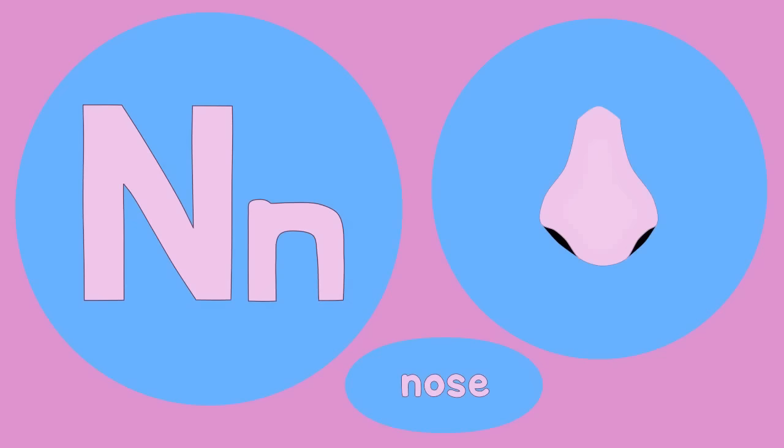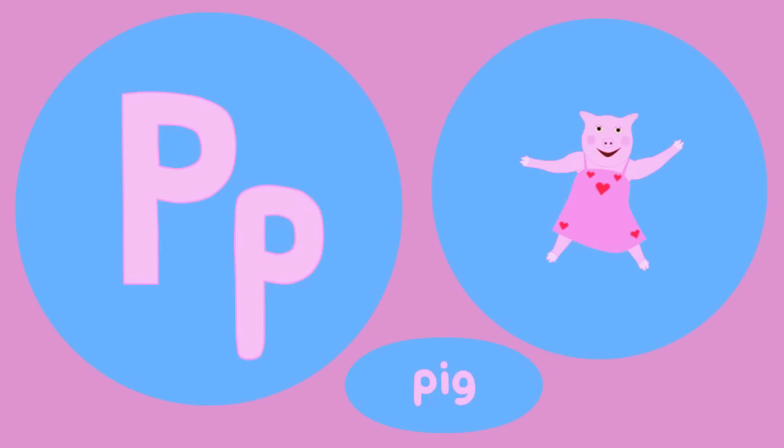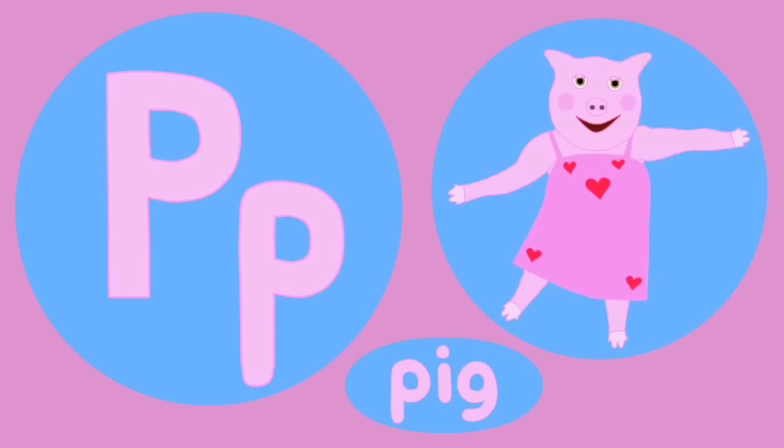M is for monkey, m-m-monkey. N is for nose, n-n-nose. O is for octopus, o-o-octopus. P is for pig, p-p-pig.